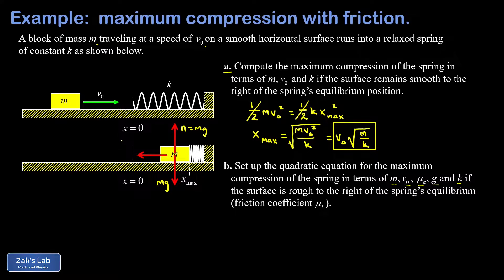Now as the block is sliding to the right, the kinetic friction force is pointing to the left. And that's given by μk times the normal force. And we'll go ahead and just put it in the diagram. The normal force is mg, so the friction force is μk m g.